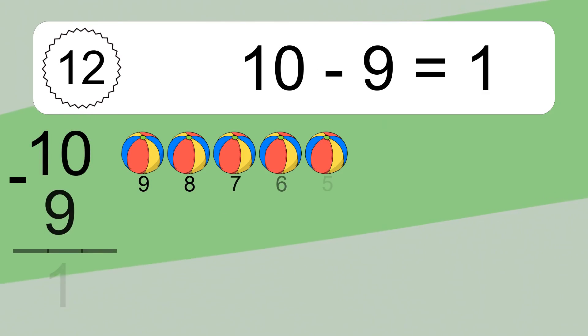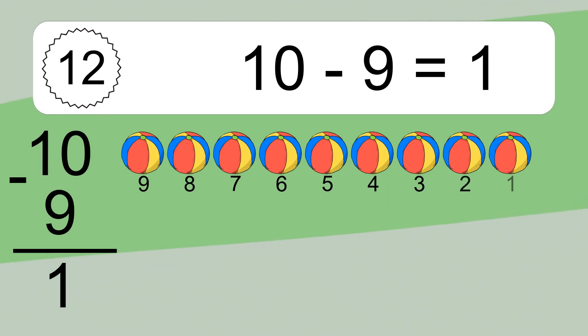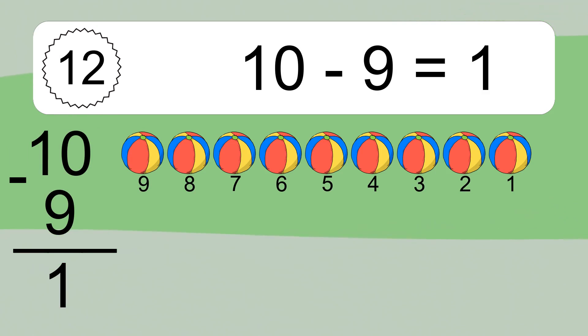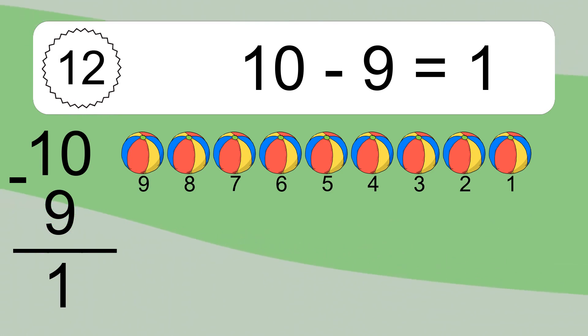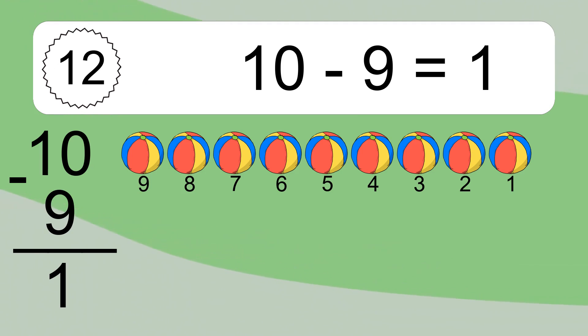10 minus 9 equals 1. Let's count it: 9, 8, 7, 6, 5, 4, 3, 2, 1.